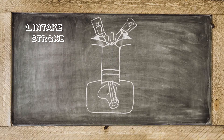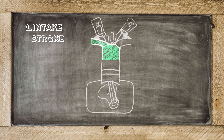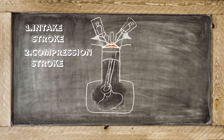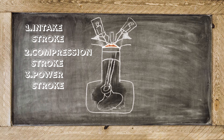On the intake stroke, the piston moves down, opening the valve, which then pulls in a mixture of oxygen and fuel. On the compression stroke, the piston moves back up as the valves close, compressing the gas and fuel mixture. On the power stroke, just before the piston reaches the top, the spark plug ignites the fuel and oxygen mixture, which then forces the piston back down.